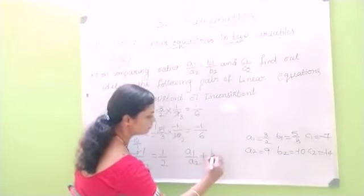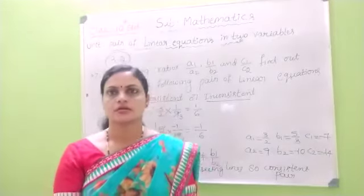Since A1/A2 is not equal to B1/B2, the lines are intersecting lines. Therefore they form a consistent pair. So the given pair of linear equations are intersecting lines and hence a consistent pair.